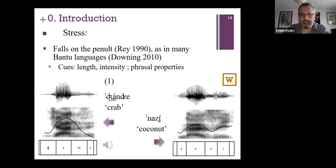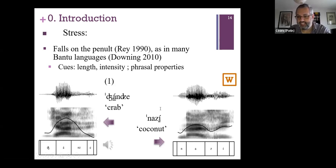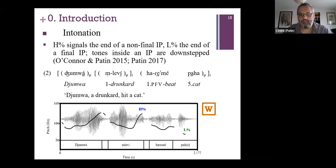Bantu languages, especially in the eastern part, mostly have stress falling on the penultimate syllable, and this is also the case in Shingazija. For example, in 'johnsay,' the penultimate syllable is clearly more intense and longer than the final syllable. This is also the case for 'nazi' (coconut), even if the tone is on the second vowel.